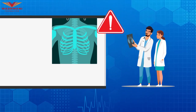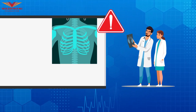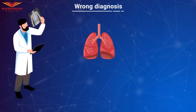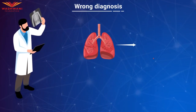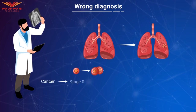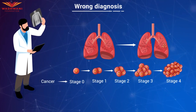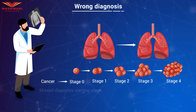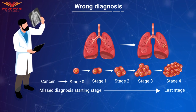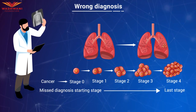Even though chest X-rays are widely used in clinical practice, interpreting the images accurately is not always achieved due to human errors or a lack of knowledge and experience of radiologists. A wrong or delayed diagnosis of such a key pathology creates a type 1 error, resulting in the patient's exposure to future medical risks — including cancer and pulmonary diseases — leading to complications and deaths.